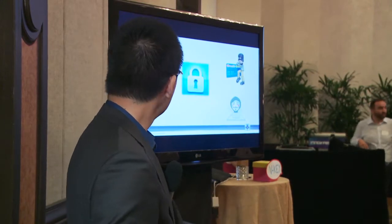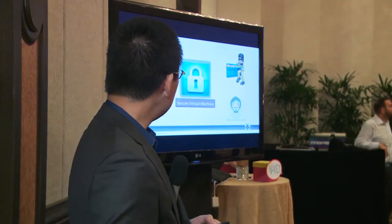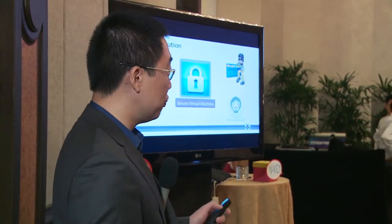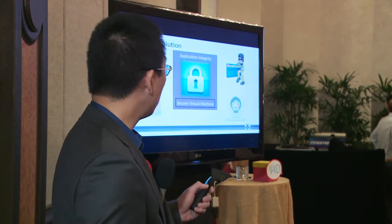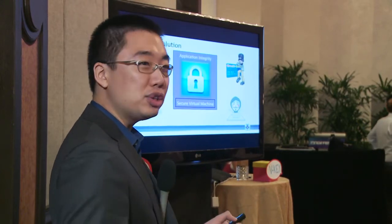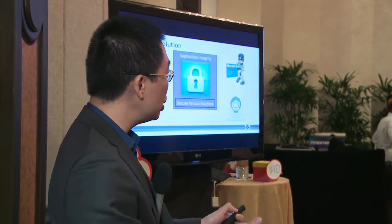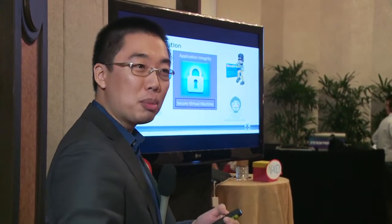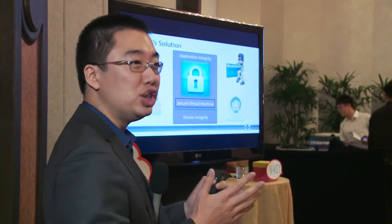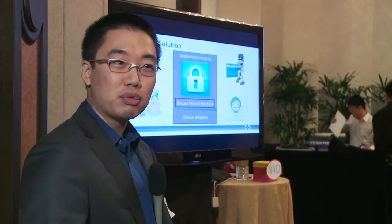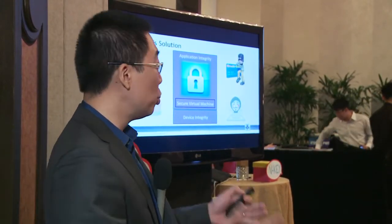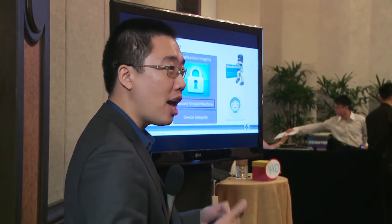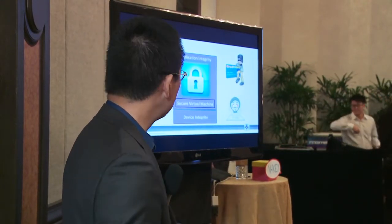So what's the solution? What we do is we build a secure virtual machine. We call this VOS, for Virtual OS. This allows us to ensure that the application has integrity when it's running on a mobile device. We're also able to ensure the device is not jailbroken, or if it is, or if there are Trojans on it, we can detect and protect your applications from that.